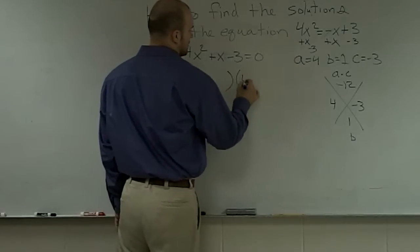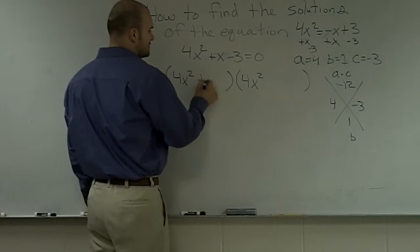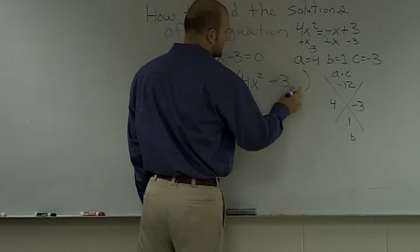4x squared, 4x squared. Then you take the two factors you found, plus 4, and plus a negative 3, which would just be minus 3.